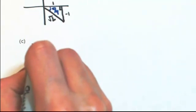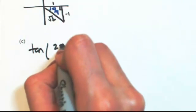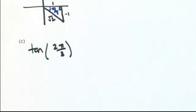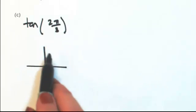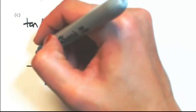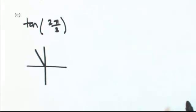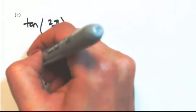Let's try one more. Let's say we have the tangent of 2 pi over 3. Okay, same idea. Draw the angle where it is. So 2 thirds of a pi. Pi is half a revolution, so 2 thirds of that. Take it back to the x axis.